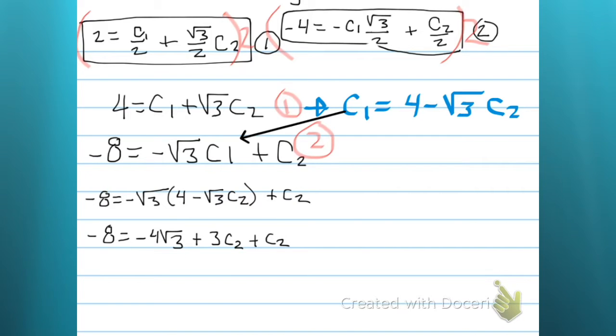So here I see I have 3 c2 and 1 c2. I'm going to go ahead and write them together as 4 c2. Now I solve for c2. I add that 4 root 3, and then I divide everything by 4. And I've got c2.